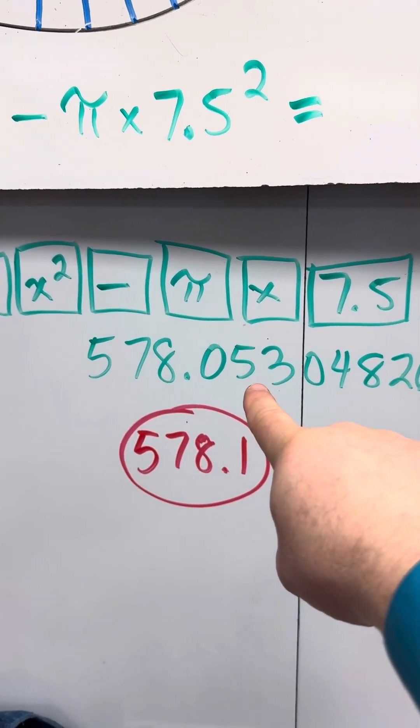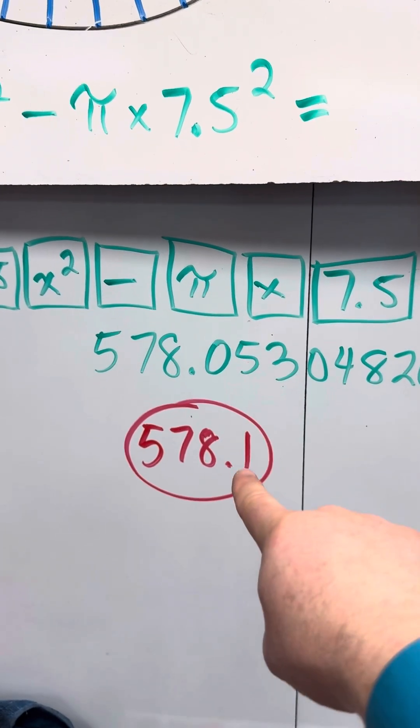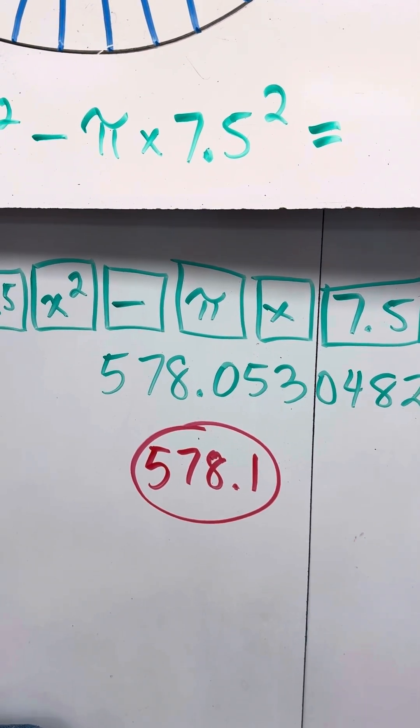Since this number here is 5 or bigger, it rounds this 0 up to a 1. Your answer is 578.1.